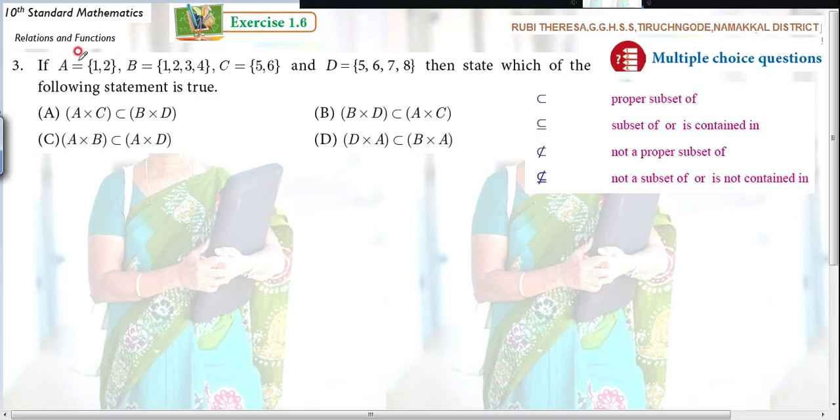Now listen here, if A equals {1, 2}, B equals {1, 2, 3, 4}, C equals {5, 6}, D equals {5, 6, 7, 8}, then state which of the following statement is true.